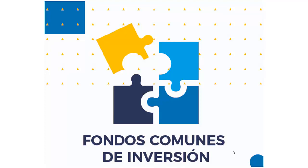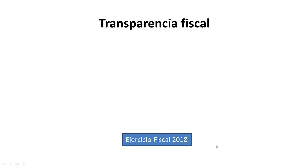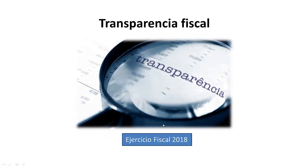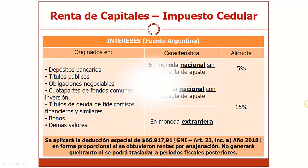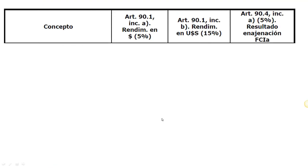El inversor que desea desprenderse de esta inversión debe vender su cuota parte en el mercado. De acuerdo a las normas de transparencia fiscal, a partir del ejercicio 2018, el sujeto obligado de la liquidación y pago del impuesto es el sujeto inversor, quien deberá incorporar dichas rentas en su declaración jurada de impuestos. El Fondo Común de Inversión Abierto actúa simplemente como un vehículo que canaliza la inversión. De esta forma, dichas rentas quedarán dentro del capítulo del impuesto cedular y sus rendimientos tributarán el 5% o 15% según corresponda del activo subyacente generador: si es en moneda nacional sin cláusula de ajuste, la alícuota a aplicar será del 5%, mientras que en los demás casos será del 15%. Armo un cuadro clasificando los rendimientos en función al artículo 90, que seguidamente pasaremos a desarrollar.